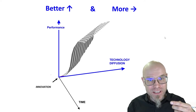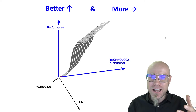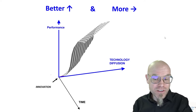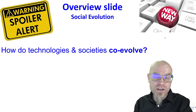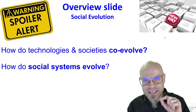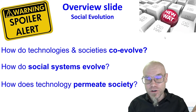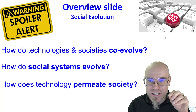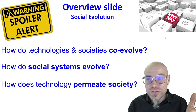Technology gets better, we have better technology, and we have more technology. It diffuses and permeates society, and with that also reorganizes society. From a perspective of innovation theory, that's how society eventually evolves, or we co-evolve with our technology. First we'll look at how technologies and societies co-evolve, then we take a deep dive into social systems and how they have evolved over time, and then we go even deeper and look at exactly how technologies diffuse in society, how they permeate and saturate society, and create new kinds of social systems.